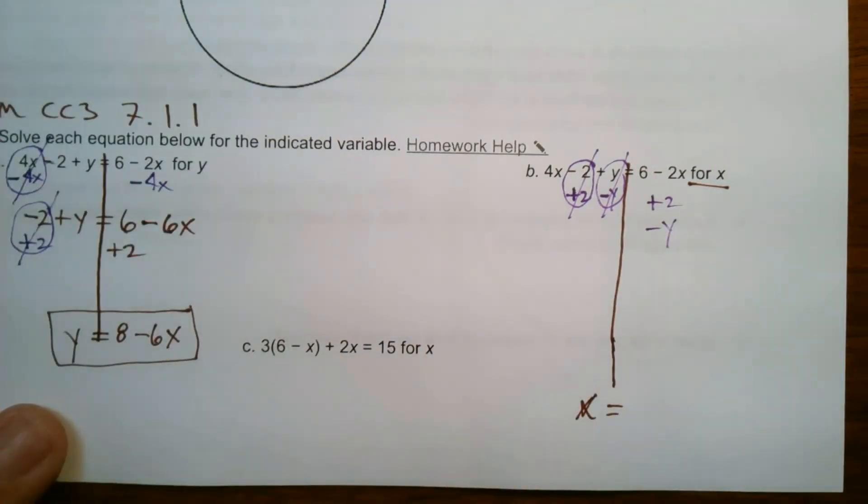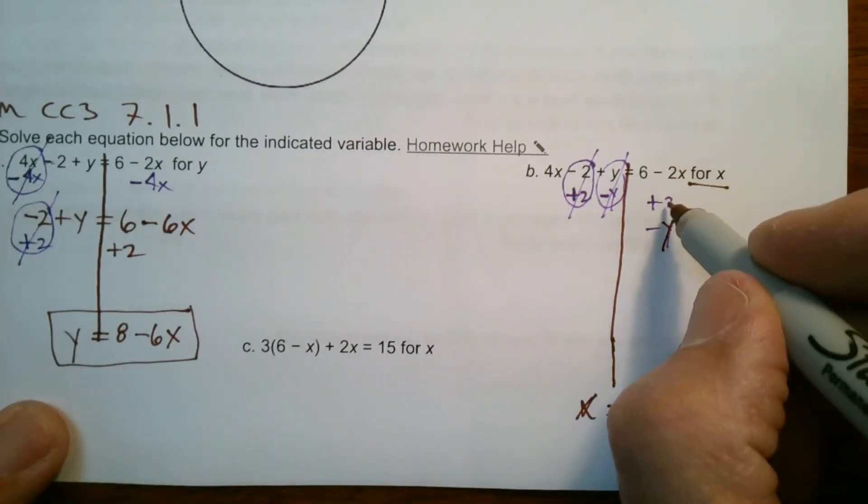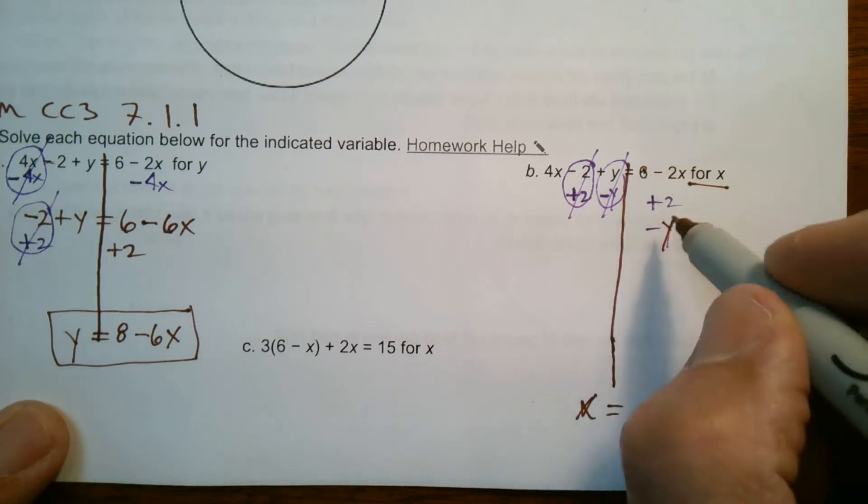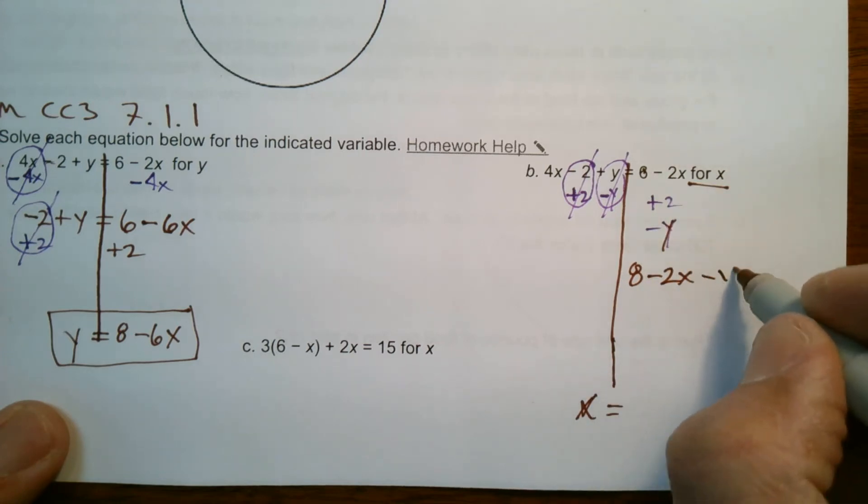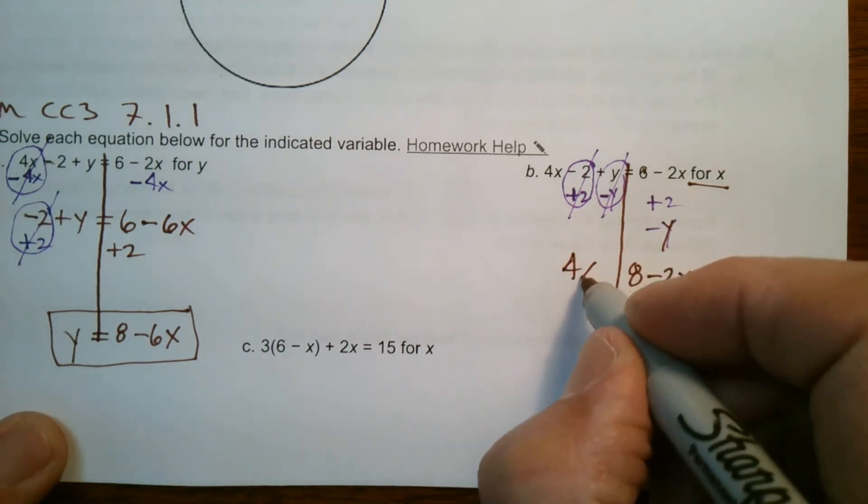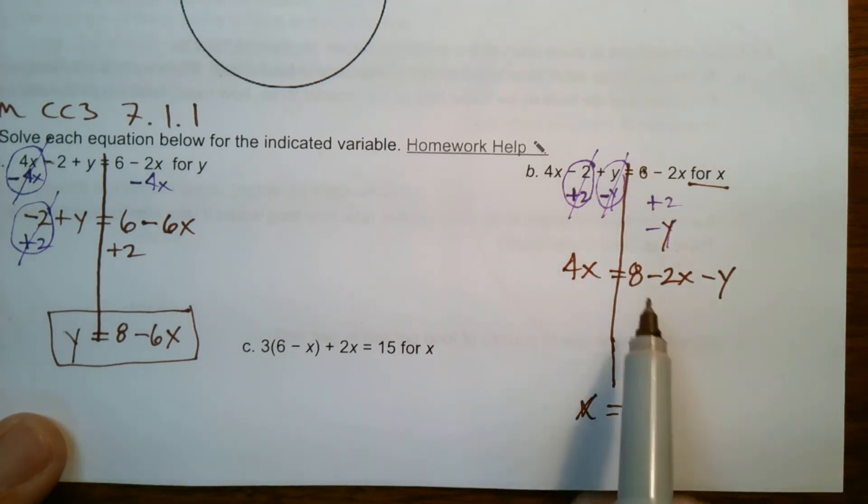So let's think about, let's think about combining like terms. What can the 2 combine with? Oh, it can combine with the 6. So it becomes an 8. I still have this minus 2x. There's nothing combined with that because that y is also then just a minus y. So now I have 4x equals 8 minus 2x minus y.